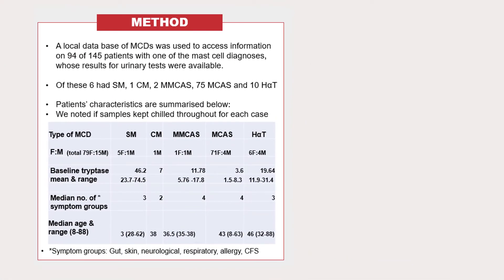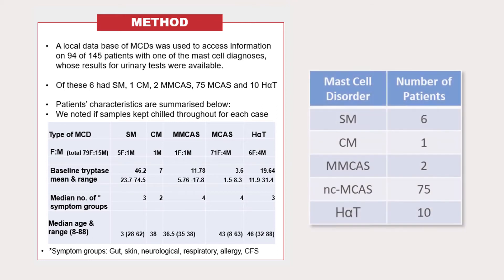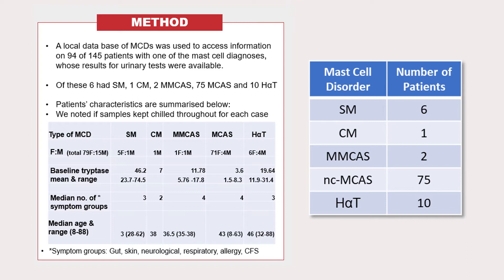We used a local database of cases to access information on the urinary tests. These were available in 94 of the 145 patients who had been tested. The large majority of patients had non-clonal MCAS. The baseline tryptase levels varied from an average of 3.6 to 46.2 in systemic mastocytosis patients. Those with the activation subtypes had the most symptoms, and there was a wide age range included in this study.